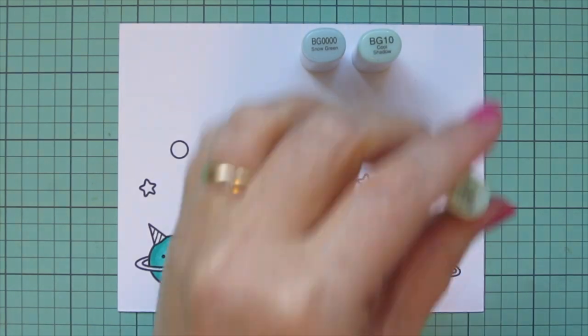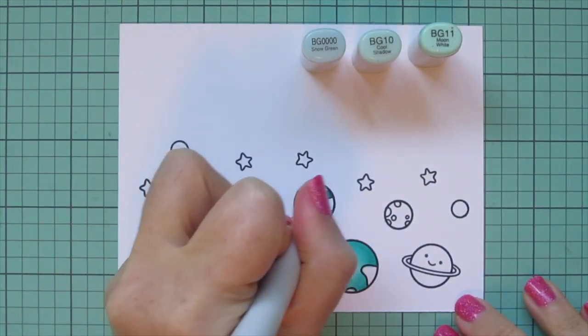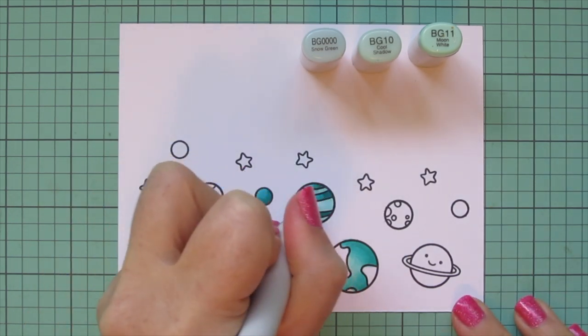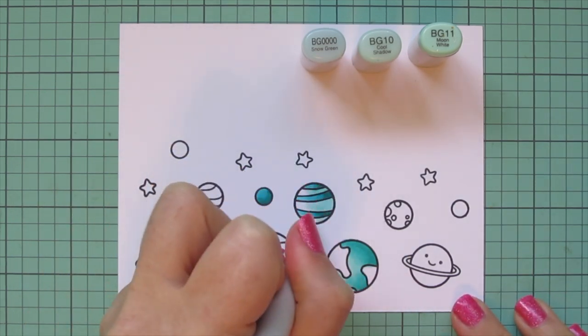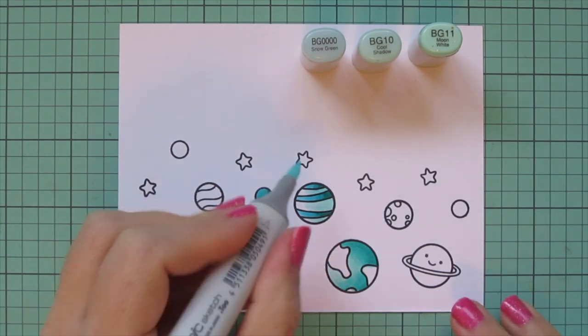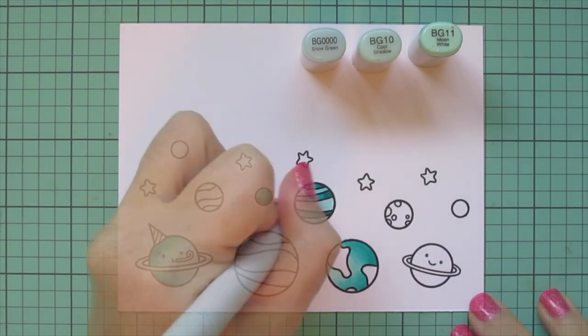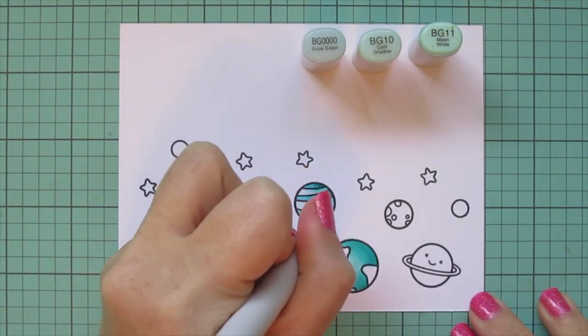Then for the other stripes, I'm going to go with the BG Quadruple 0, and then back to the BG10 and BG11. So I'm putting the BG11 on the right, blending out with the BG10 for the mid-tone, and then using that BG Quadruple 0 for the highlight.